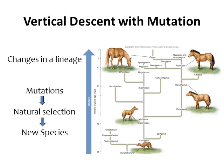In the image, at the bottom we have millions of years ago, and up towards the top we have current time. This is an example showing vertical descent with mutation in horses. Way back, millions of years ago, horses were very tiny and lived in a forest environment. As that environment changed from forest to more open prairie, these horses adapted and changed over time to become bigger, stronger, and able to run faster. Eventually we end up with the modern day horse we're all familiar with.